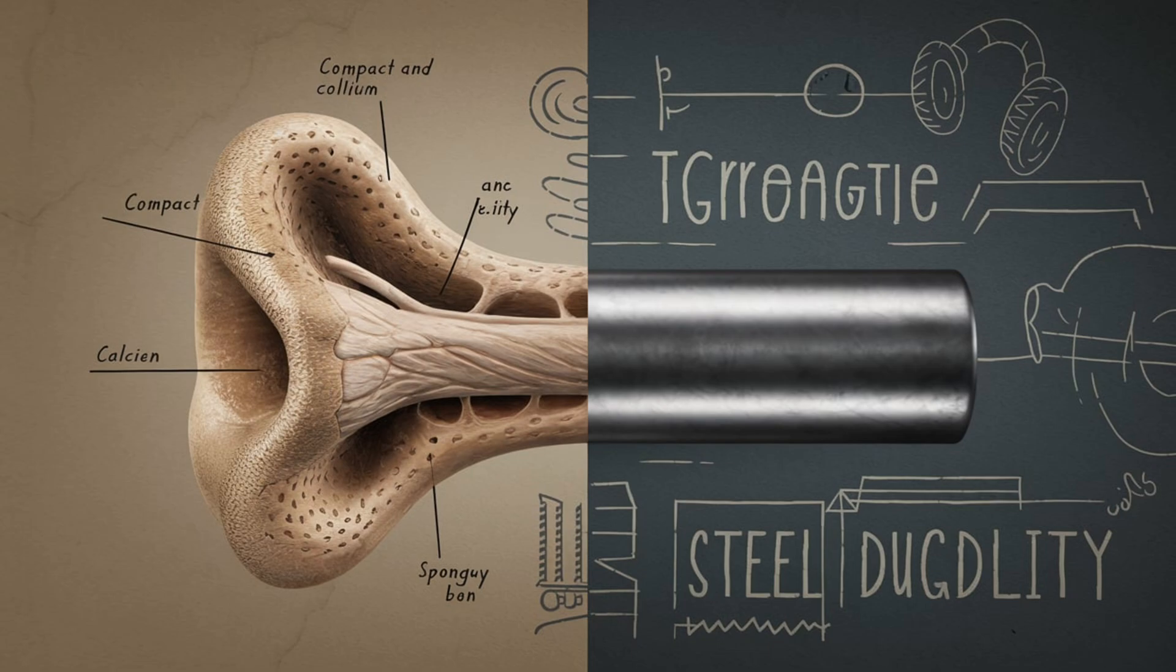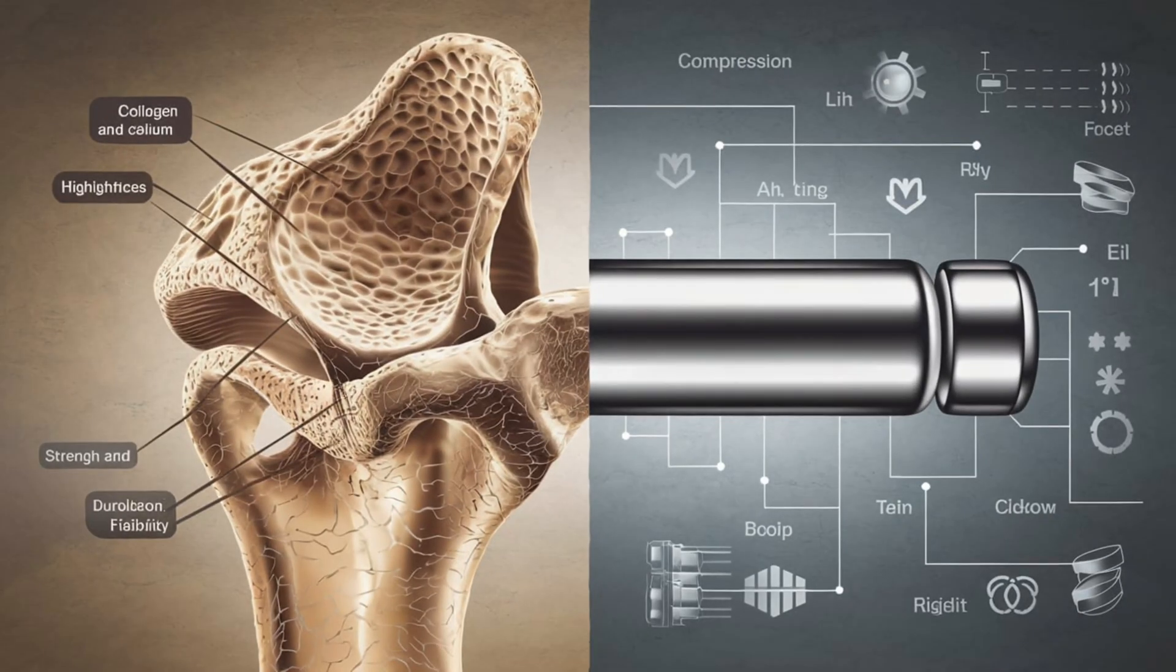Now, let's look at the composition of these materials. Steel is made mostly of iron and carbon, giving it that strong, unyielding structure.